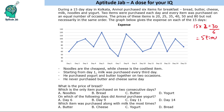The price of these items is 20, 25, 35, 40, 50, and 80 — but not necessarily in the same order, so we do not know the price of these items in their respective order.